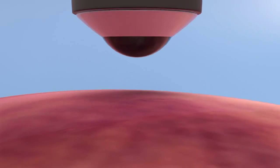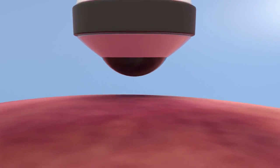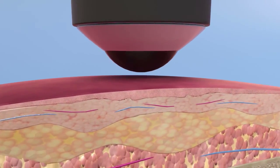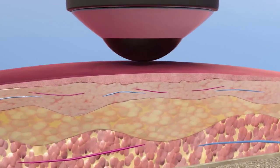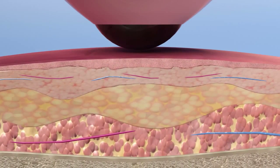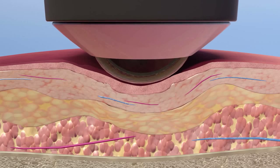Laser therapy uses a process called photobiomodulation to change the condition of damaged tissue by stimulating cellular metabolism, thereby accelerating the healing process. A large convex treatment head can be used to compress superficial tissues, displacing excess fluid and enhancing laser penetration to deep structures.